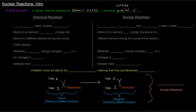Let's compare chemical reactions to nuclear reactions. In chemical reactions, electrons react — the outside orbital electrons, which are outside of the nucleus. In nuclear reactions, nucleons react. The nucleons are specifically the protons and the neutrons inside the nucleus. That's why they're called nucleons.